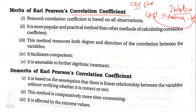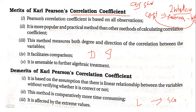This method can find correlations between demand and supply of a product, or correlation between lockdowns and spread of coronavirus — which is how doctors do research and come up with precautionary measures. So it is a most popular and practical method.